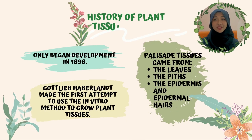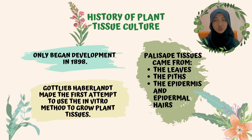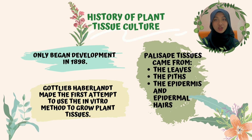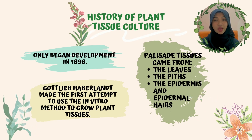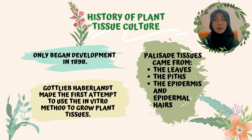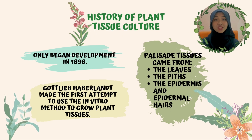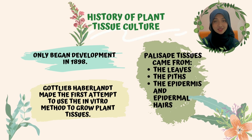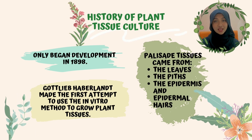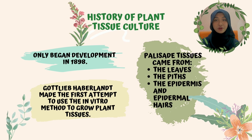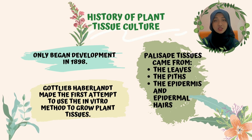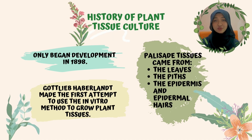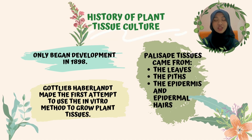Moving on to the history of plant tissue culture — although tissue culture had been around since the beginning of the 20th century, the development of plant tissue culture only began in 1898. Gottlieb Haberland, a German botanist, made the first attempt to use the in vitro method to grow plant tissues. The cells he used came from many parts, including pericycle tissues, the pith, the epidermis, and epidermal hairs. The initial experiments were rather successful, but the cells did not proliferate further.